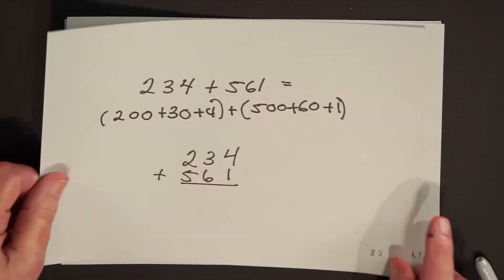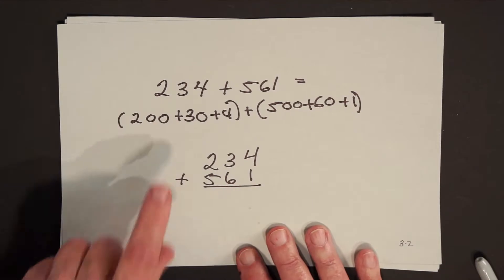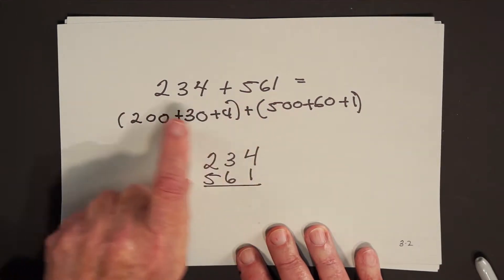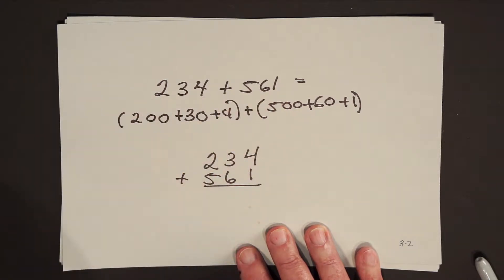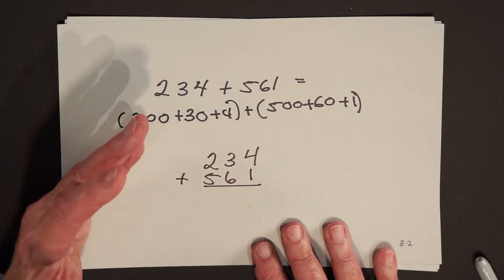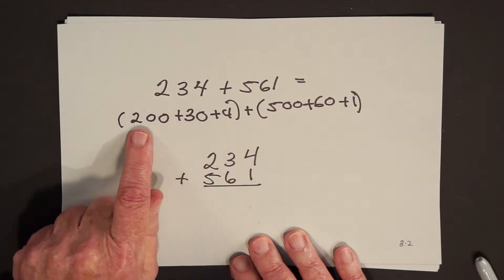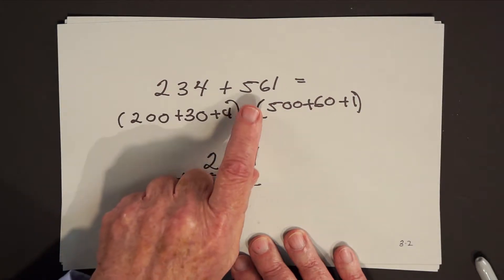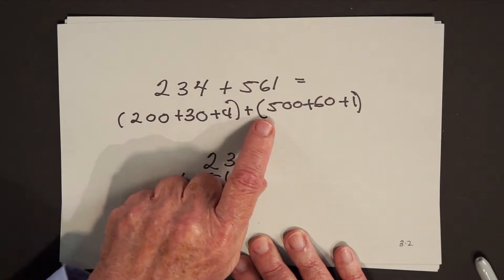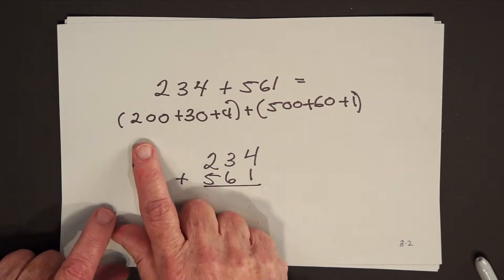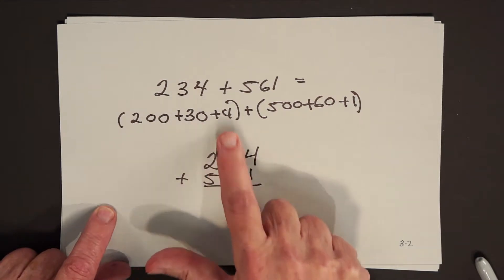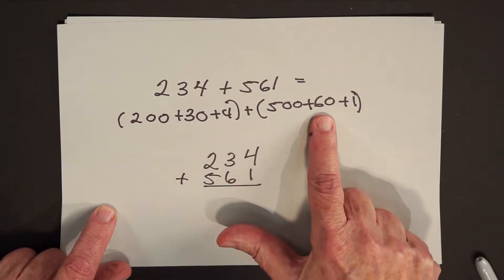Let me show you an example. You're called upon to add 234 plus 561. Since this is a course for you, I can assume you already know place value arithmetic. All we're trying to do is show a different way to internalize it, to make it more natural for students. What does this really say? 234 written in place value is an abbreviation for 200 plus 30 plus 4, and 561 is an abbreviation for 500 plus 60 plus 1. So what we're told to do is to start with 200, add 30, then add 4, then add 500, then add 60, and then add 1.